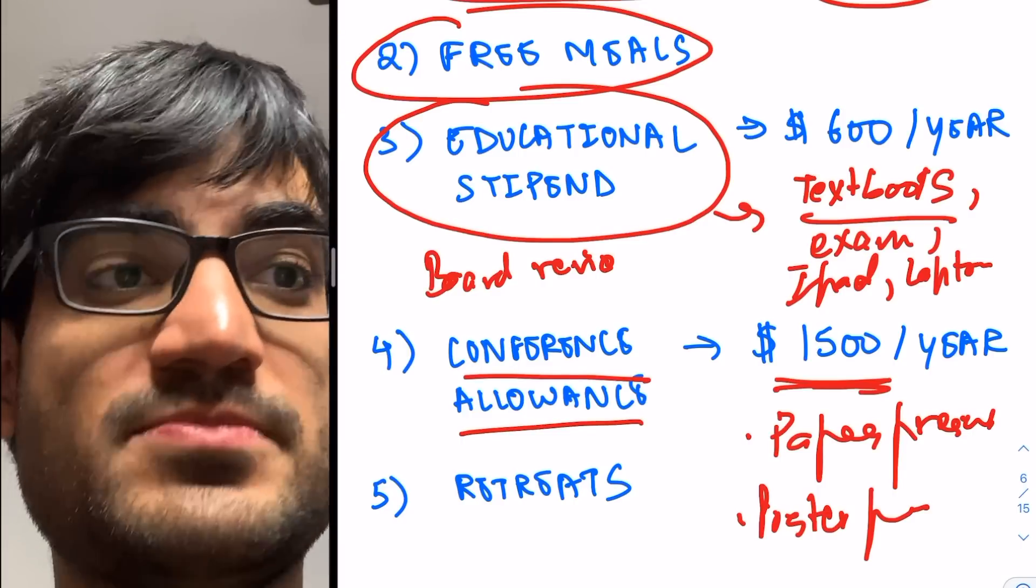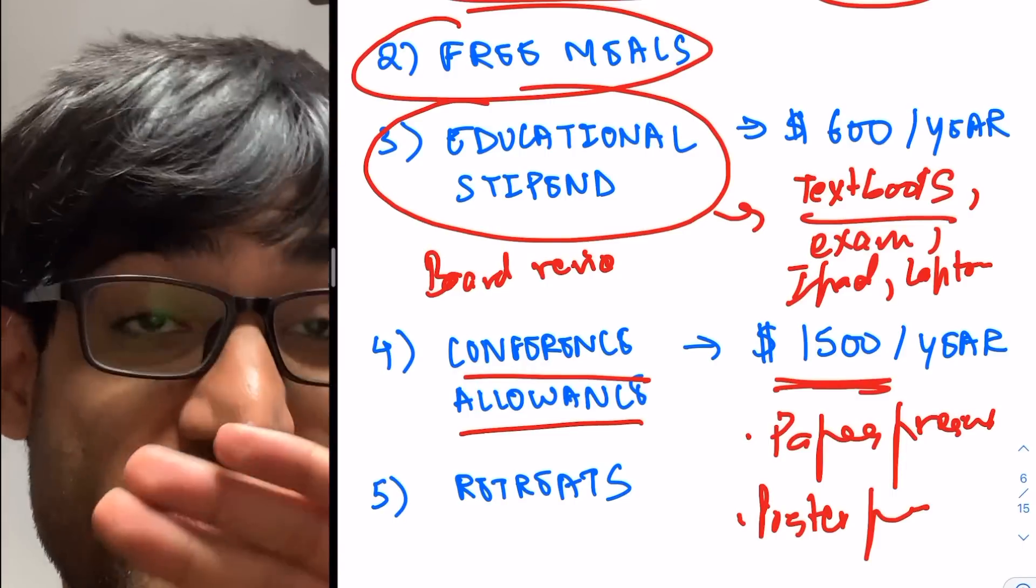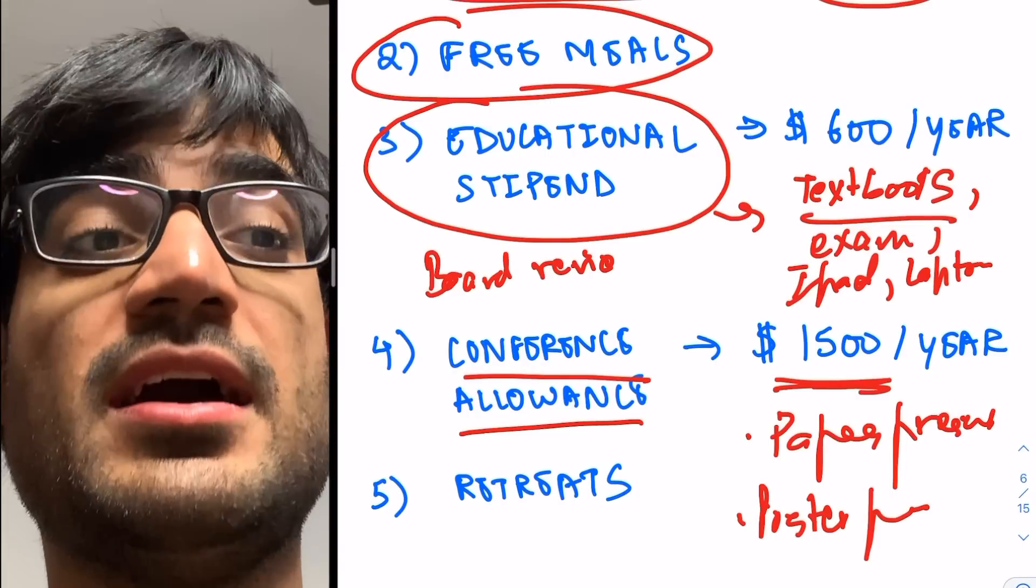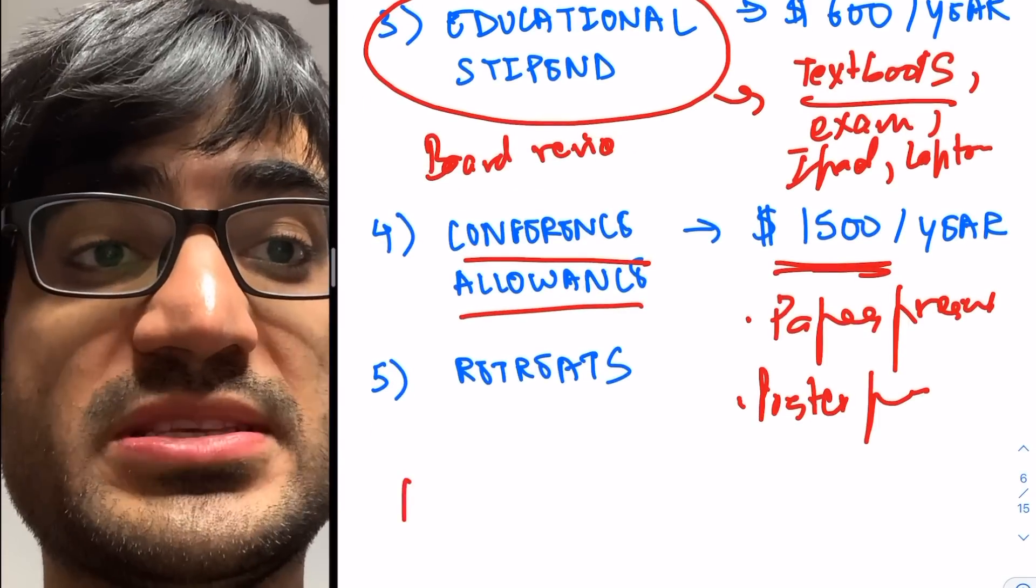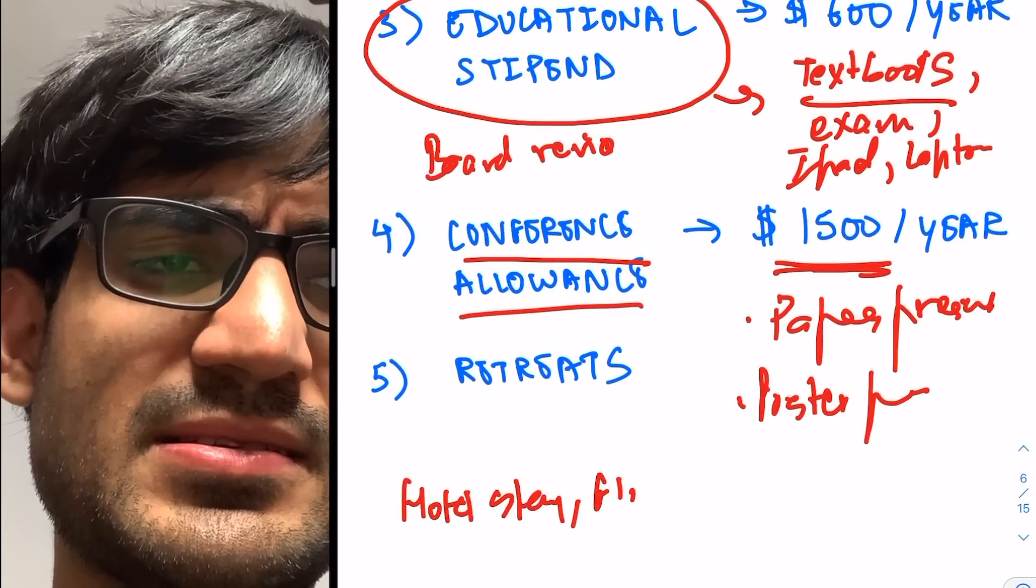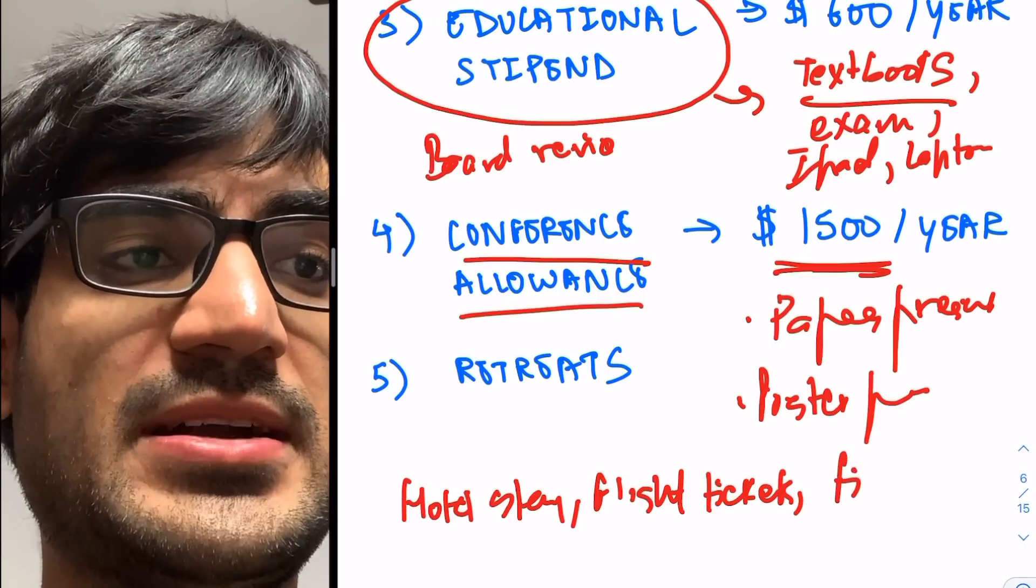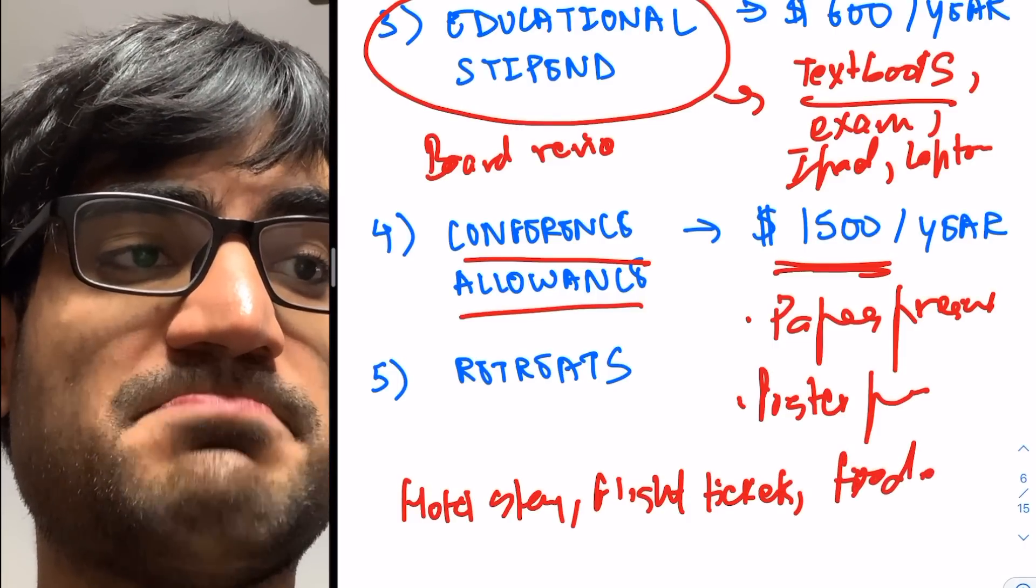And for that, the residency programs are ready to pay for up to $1,500 per year. This includes your hotel stay, any flight tickets, food expenditure, and all of that. So that's great.